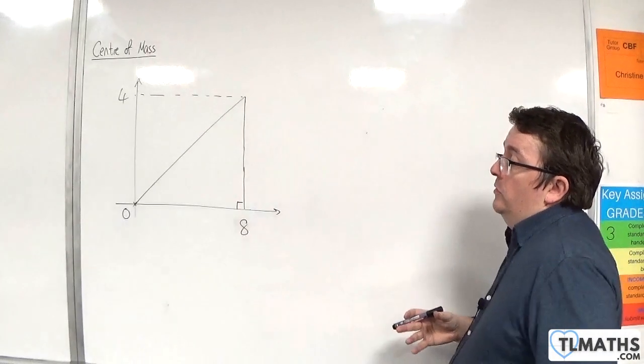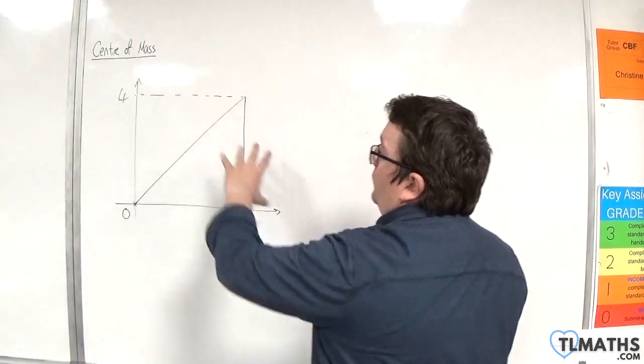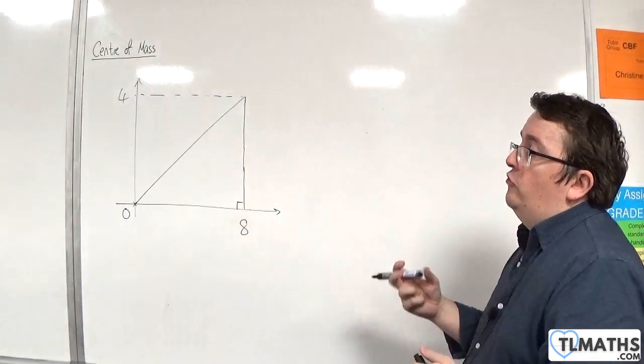In this example, we have a right-angled triangle with a base of 8 and a height of 4, and we want to find the centre of mass.